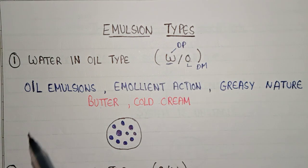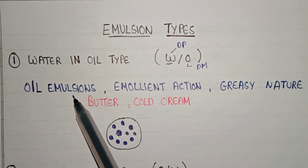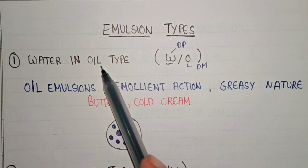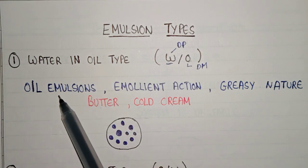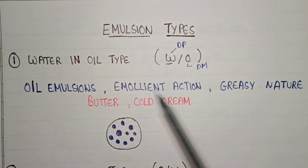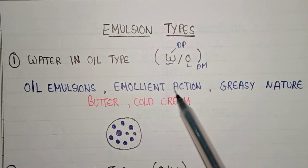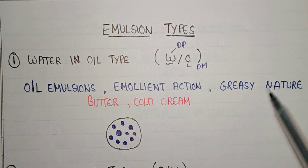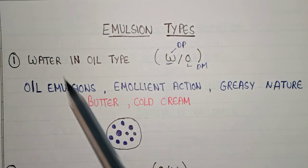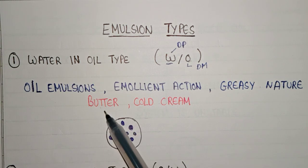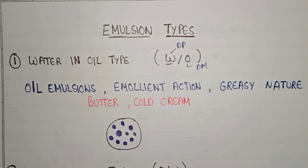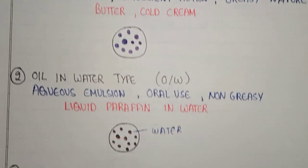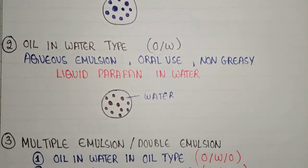This type of emulsion is also known as oil emulsion because the dispersed medium is oil. It will have oil properties and emollient action, meaning an oil-like action on the body with a greasy nature. Examples of water-in-oil type emulsion are butter and cold cream.